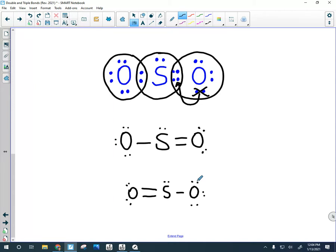And so you might ask, is one more valid than the other? And neither one is more valid. And what we actually do when we have this case is you should draw all the valid structures and put a double arrowhead between them. These are called resonance structures.